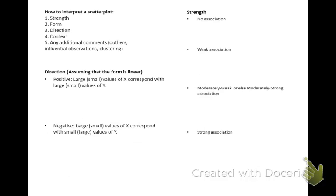We're going to learn how to interpret a scatter plot now. The five things you need to look for are strength, form, direction, context, and then any additional comments on outliers, influential observations, and clustering.